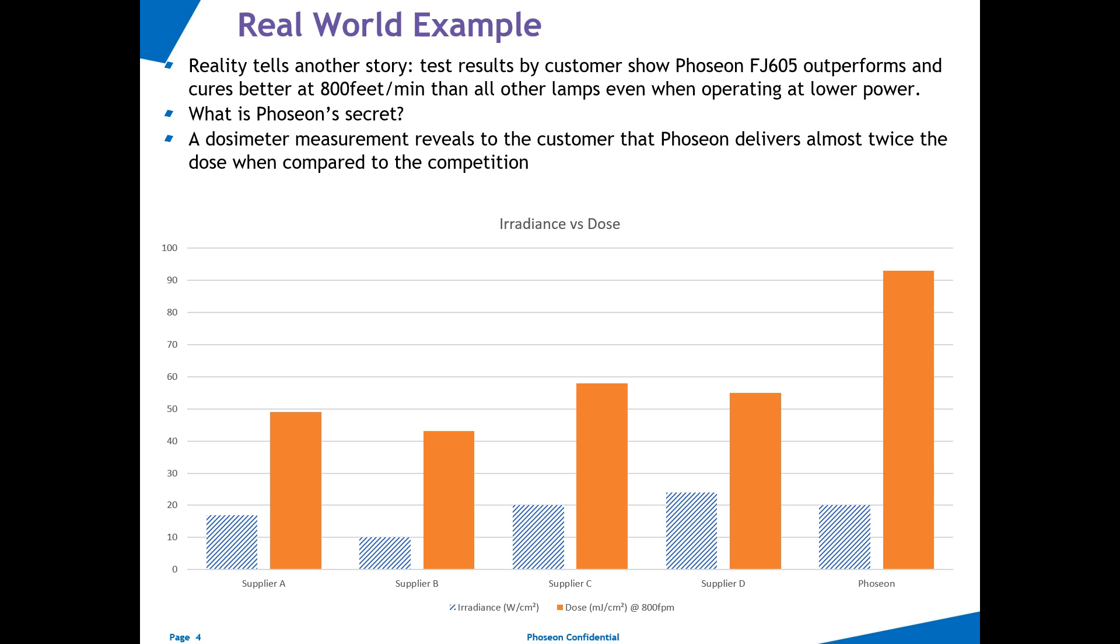After this surprise, the customer measured the dose with a radiometer at 800 feet per minute. You can see the test results on the bar graph in orange shown below. The customer found that Phoseon delivered almost twice the dose when compared to the competition, meaning almost twice as much energy was transferred to the print at the same comparable process speed.